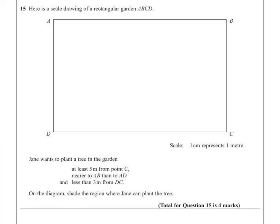So there are three elements of construction here that we're going to have to use. The first one says we must be at least 5m from point C. So if we wanted to find all the points which are 5m from C,